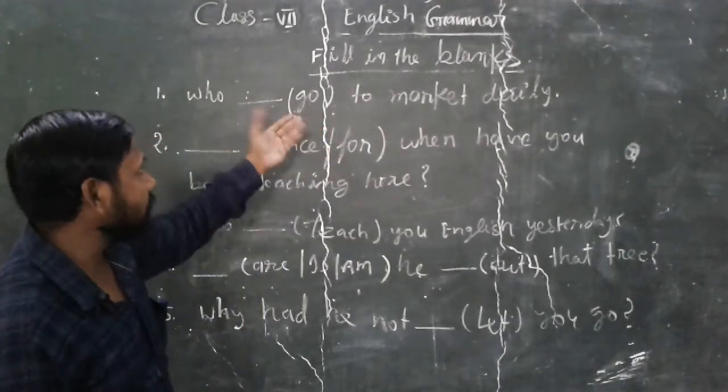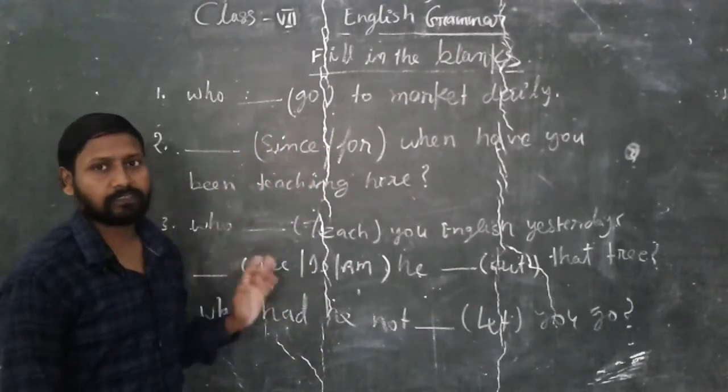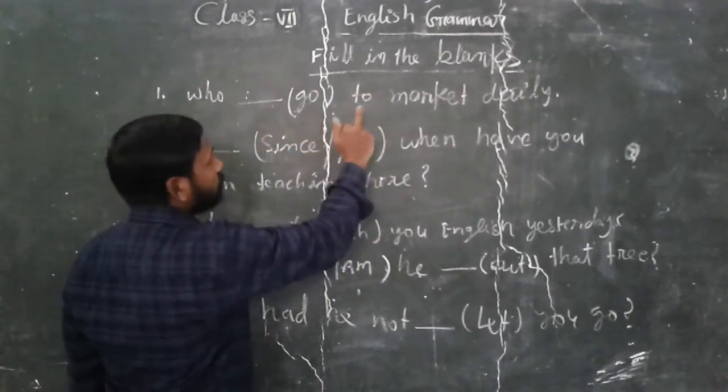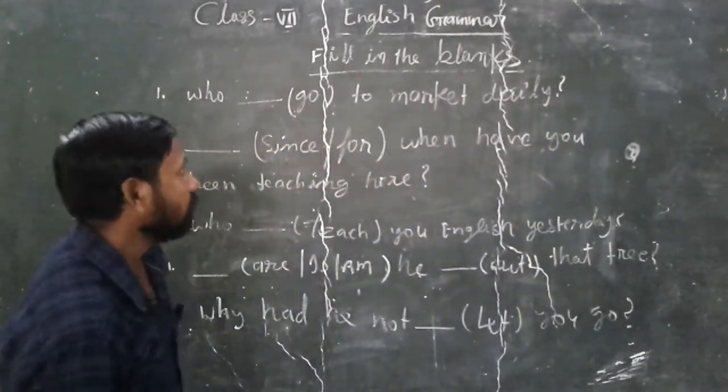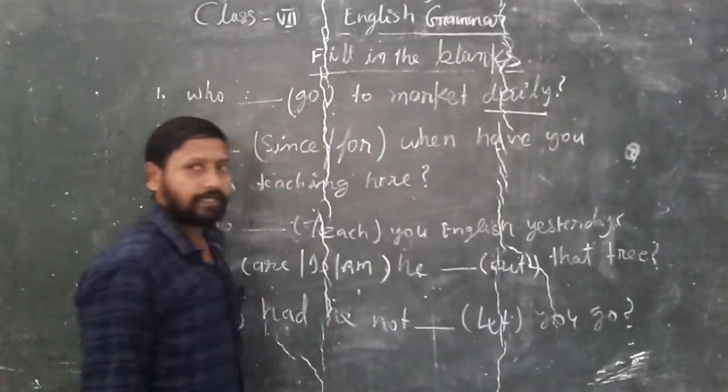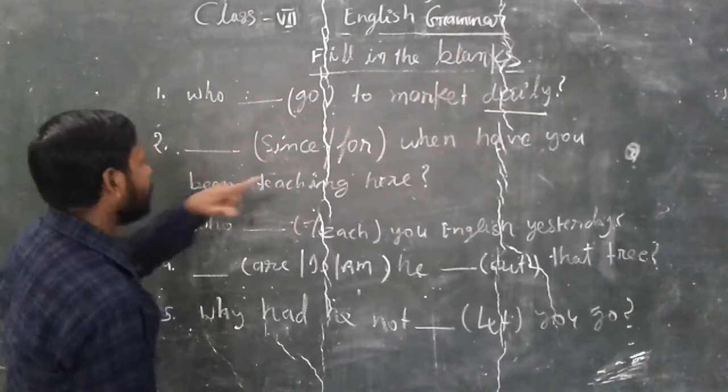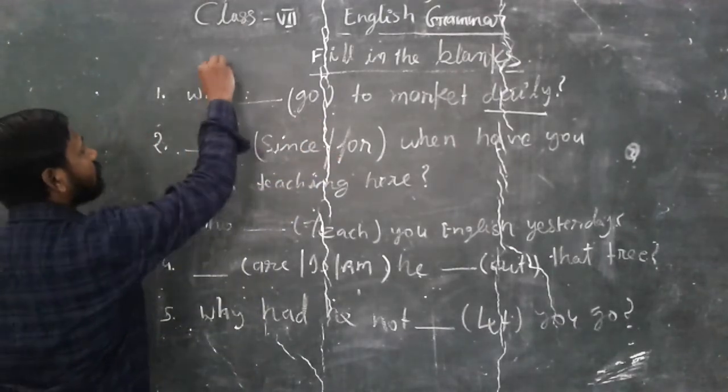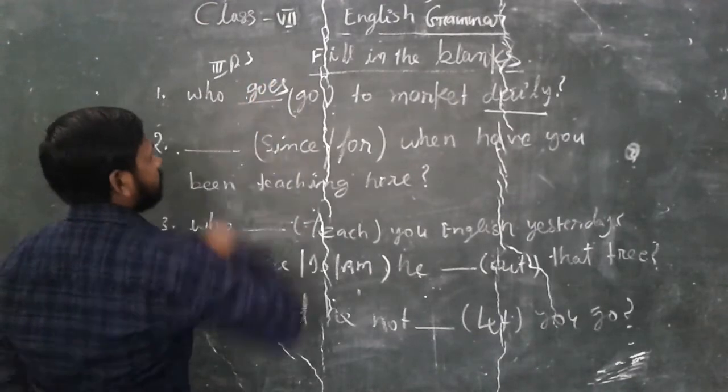Who and Go. You have to change in any tenses. If you will recognize this is a present different tense, past continuous, future perfect, anything. Who Go to market daily. Here is a time expressing adverb has been used here, daily. So daily, if you will get the daily, that means this is a present indefinite tense. And according to the present indefinite tense, who is a third person singular. So it is used here Goes.